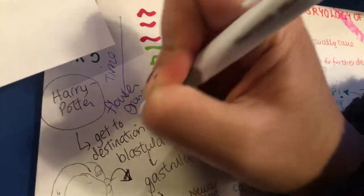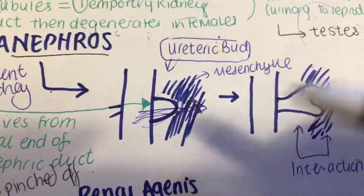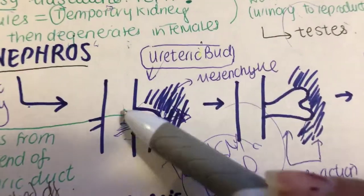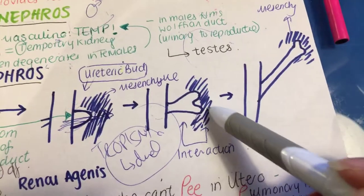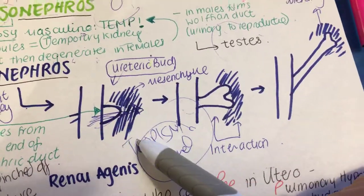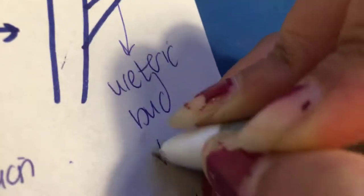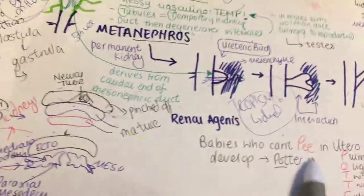The ureteric bud protrudes further, grows, starts budding more, and actually splits. Around it you have the mesenchyme. The ureteric bud keeps growing and is actually what gives rise to our ureter. The rest of the mesenchyme gives rise to our kidney.